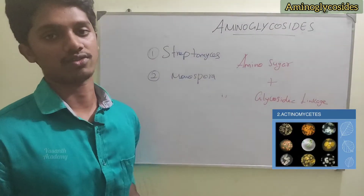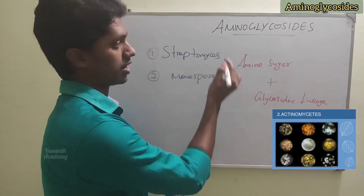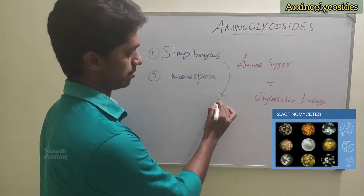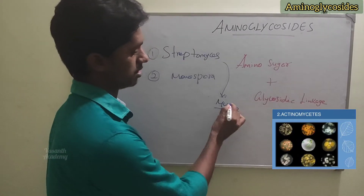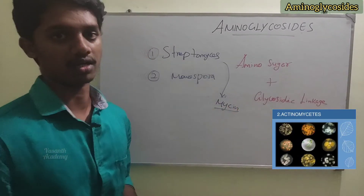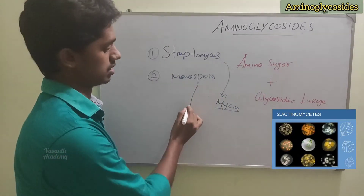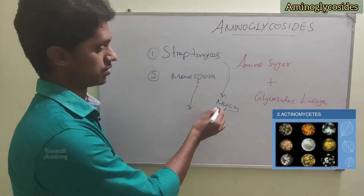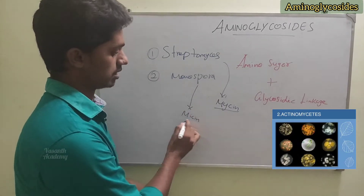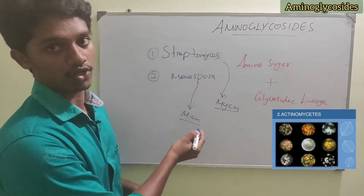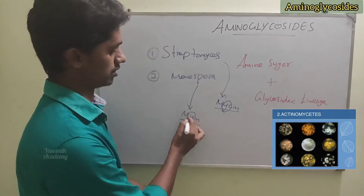Aminoglycosides are named based on which genus they come from. If derived from Streptomyces, the suffix 'mycin' is used in the spelling — M-Y-C-I-N. If derived from Micromonospora, 'micin' is used in the name — but there is a difference between Y and I.